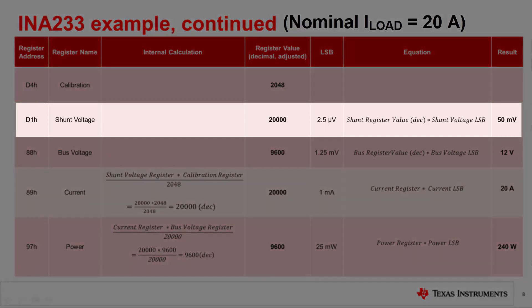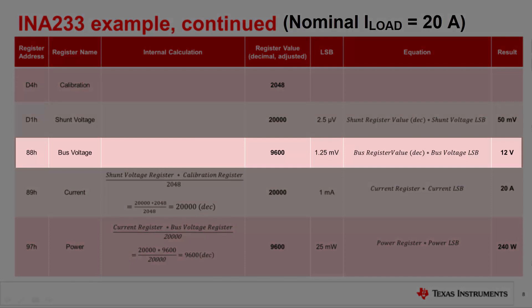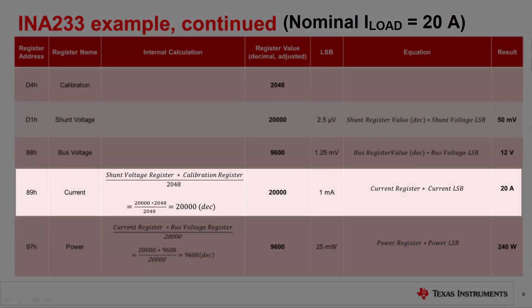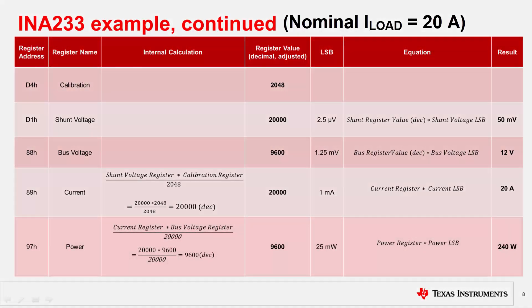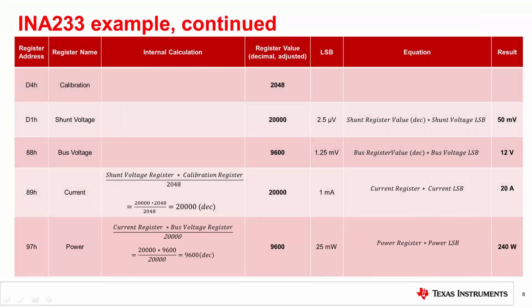The shunt voltage register reads 20,000 in decimal, and when multiplied by the fixed shunt voltage LSB of 2.5 microvolts, yields 50 millivolts — which is what we expected for a 20-amp current running through a 2.5 milliohm shunt. The bus voltage register reads 9,600 in decimal, and when multiplied by the fixed bus voltage LSB of 1.25 millivolts, yields 12 volts. The current register reads 20,000 in decimal, and when multiplied by the 1 milliamp current LSB, we get 20 amps as expected. The power register reads 9,600 in decimal, and after multiplying by the 25 milliwatts power LSB, equals 240 watts — equal to our expected value of 20 amps times 12 volts.